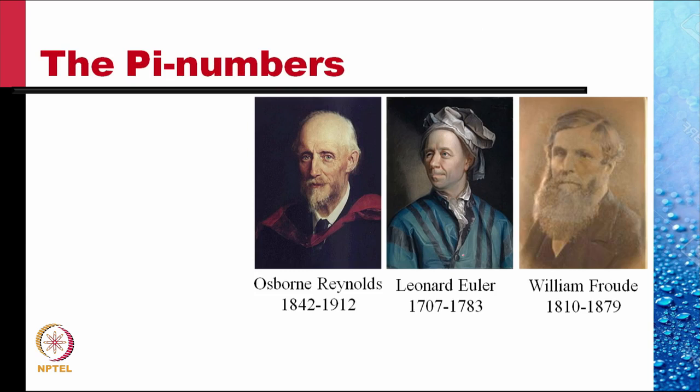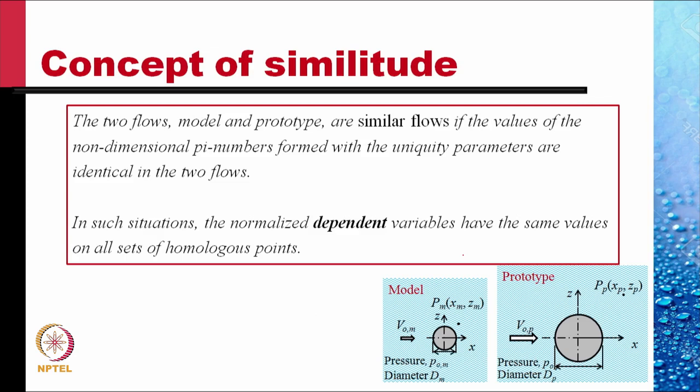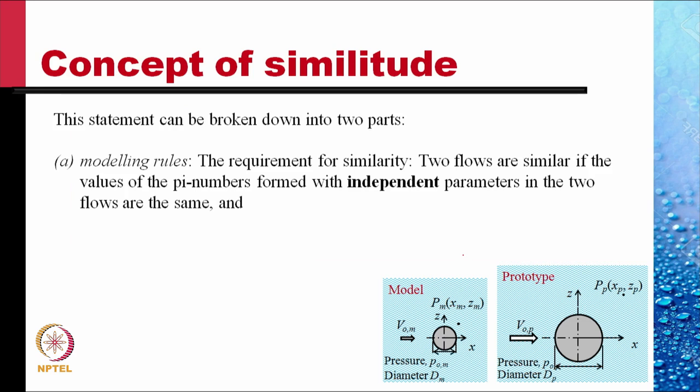The three pi numbers are named after Osborne Reynolds (a British scientist), Leonard Euler, and William Froude (another British scientist). Two flows — model and prototype — are similar flows if the values of the non-dimensional pi numbers formed with the uniqueness parameters are identical in the two flows. In such situations, the normalized dependent variables have the same values at all sets of homologous points.